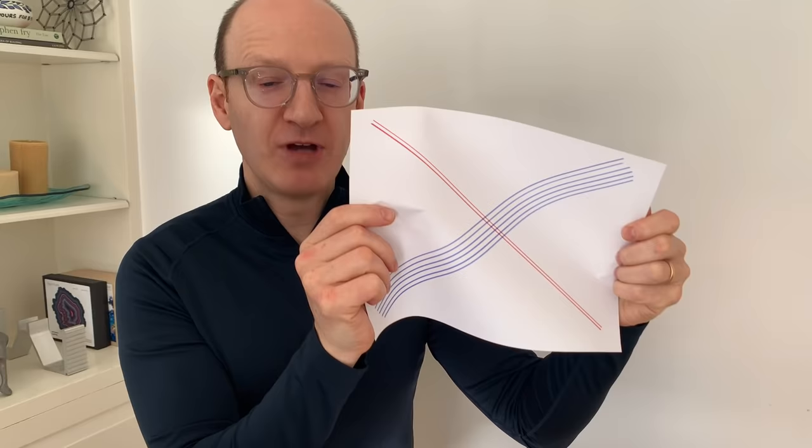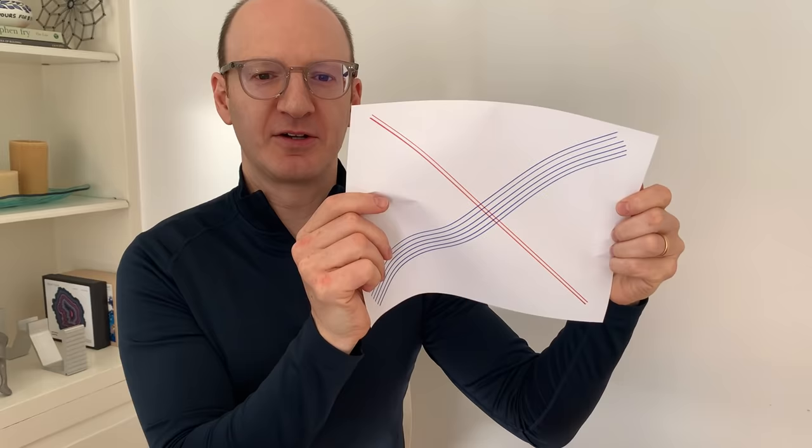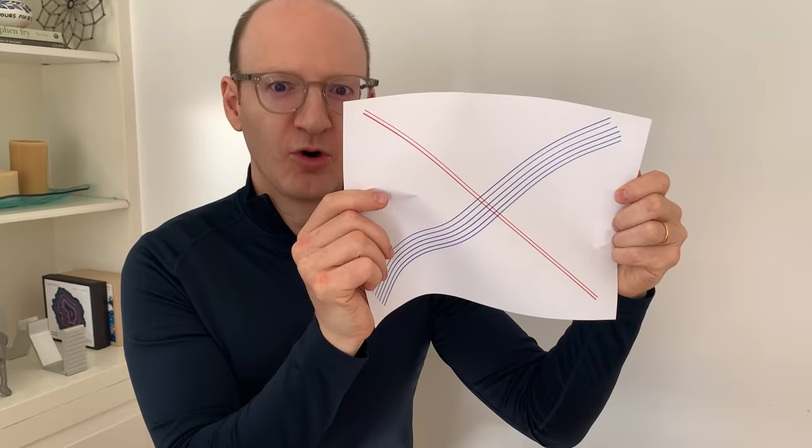So you can see the red line, that diagonal, that's still in tension. It's straight, and it's taut in that diagonal direction from my nose corner to the opposite diagonal corner. Whereas where the blue lines are, that's in compression, and you can see the paper has kind of buckled along that diagonal direction.